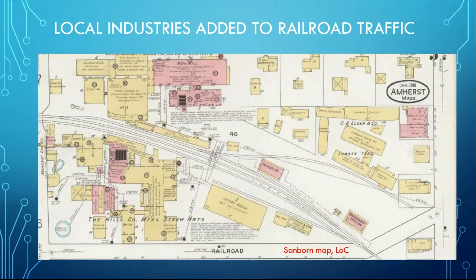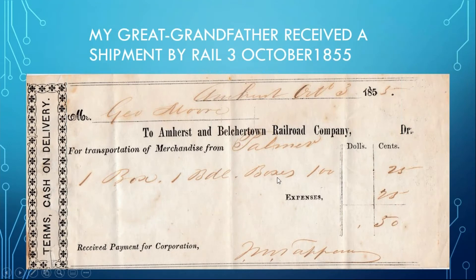Obviously, low passengers aren't enough to run a railroad — there were a lot of local industries on that railroad. You can see down to the lower right — that's the passenger station, obviously a freight house behind it. And then this was a straw hat factory; that whole area was covered by this big straw hat factory. My grandfather received a shipment by rail on October 3, 1855. Being good Yankees, we save everything — here's his receipt from 1855. He paid 50 cents to have these boxes delivered to him in Amherst.